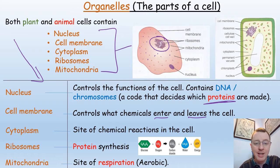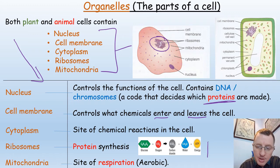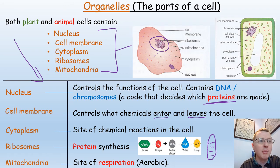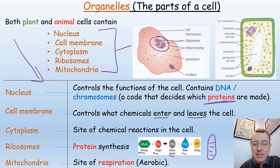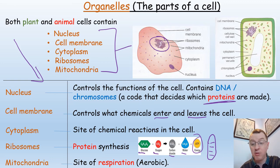You'll learn more about endoplasmic reticulum at A-level. Mitochondria have a structure that looks like a sausage shape with some lines in the middle. Mitochondria are the site of aerobic respiration — a very important chemical reaction where glucose and oxygen are joined together to form carbon dioxide and water, releasing energy. That energy is trapped and carried around the cell in a molecule called ATP.